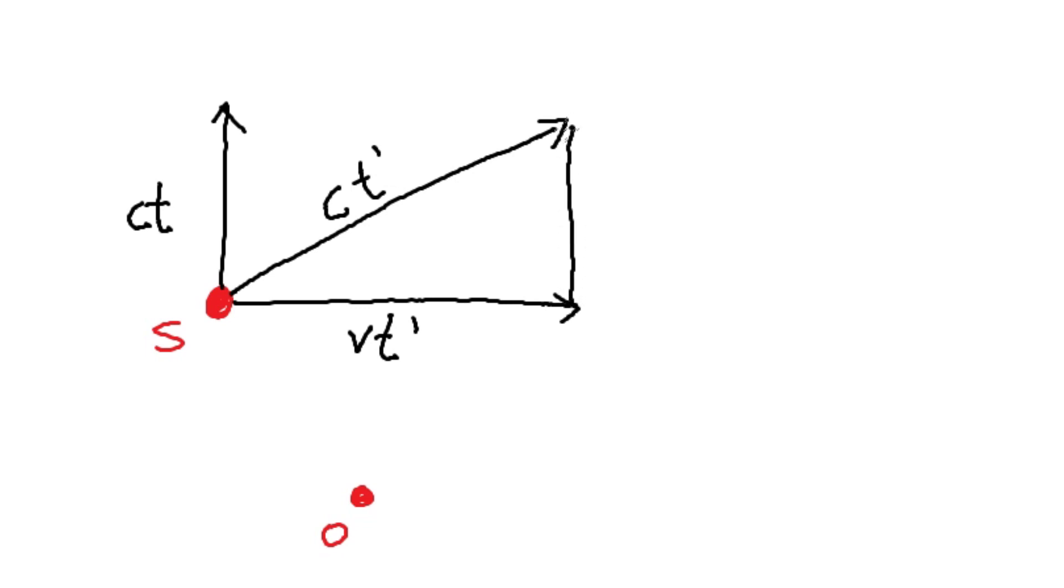And this side of the triangle is obviously going to be C, T, because these two sides are equal. And this is the premise that we start the derivation from.